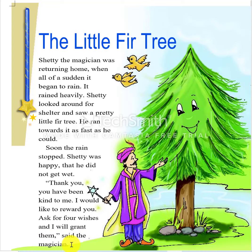The magician thanked the fir tree for its kindness. Then he promised to reward the fir tree. Reward means gift — he promised the fir tree to give a gift. Then he asked the tree for four wishes and said he will fulfill them. The word here is grant. Grant means fulfill. He promised to fulfill its four wishes.